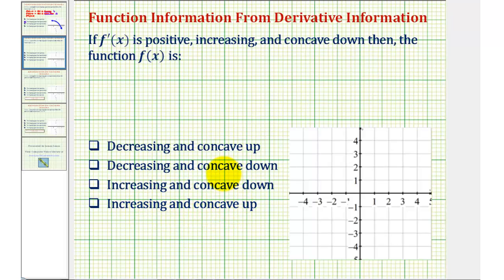The sign of the first derivative indicates whether a function is increasing or decreasing. If the first derivative is positive, the function is increasing. If the first derivative is negative, the function is decreasing.